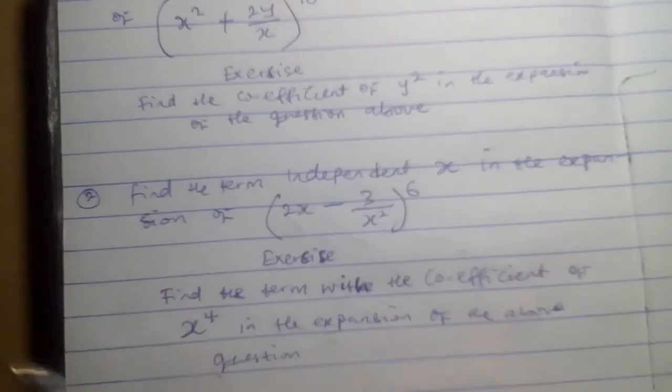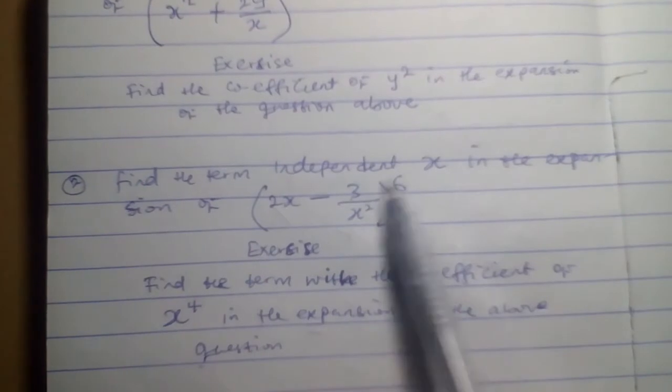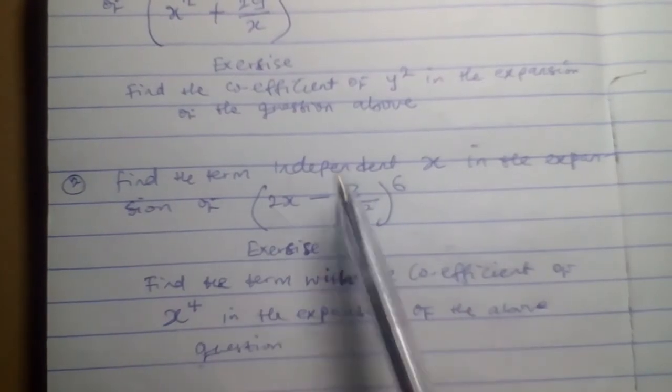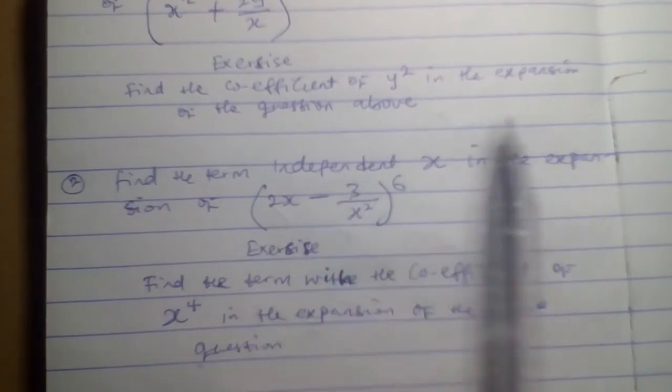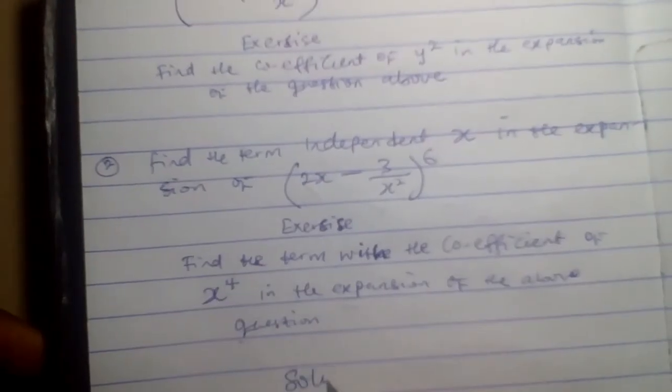Now, the first question says: find the coefficient of y to the power 4 in the expansion. The second question says: find the term independent of x in the expansion. I will solve this one, and you will solve that one. Let us start with Solution 1.